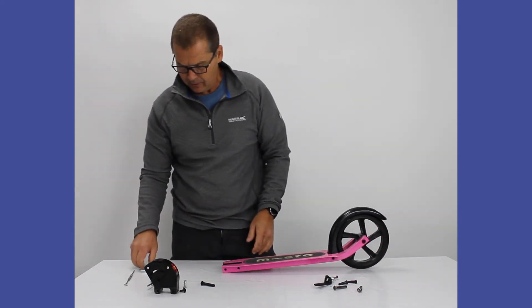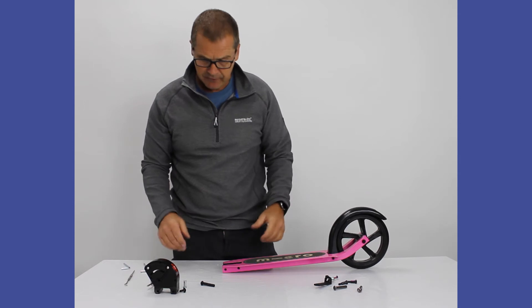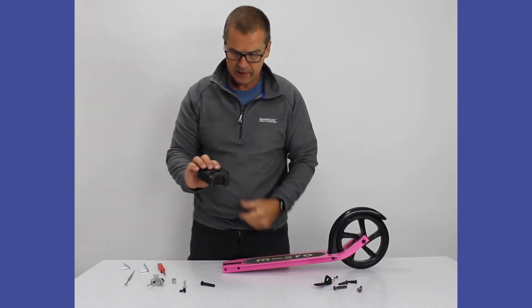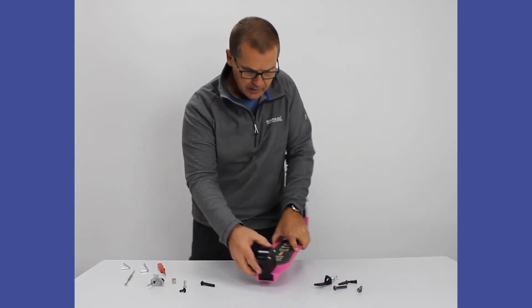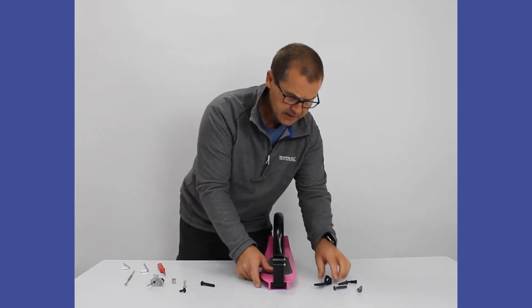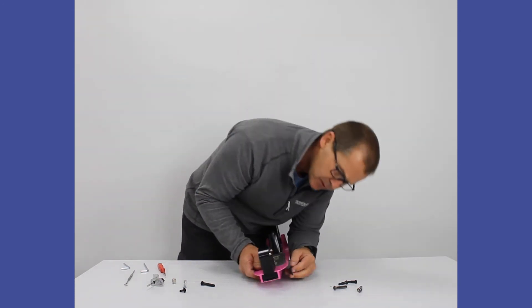Assembly is just the reverse, but I'll take you through it. We're going to take our new folding block, place it in. Our kickstand will go to the left-hand side as we're standing on the scooter.